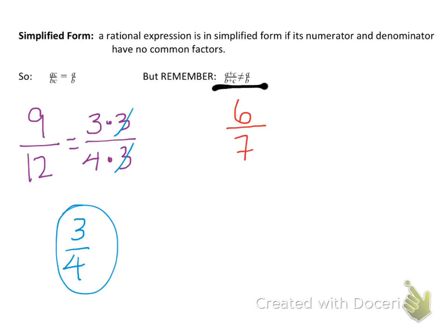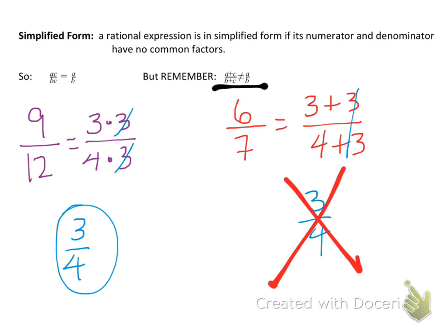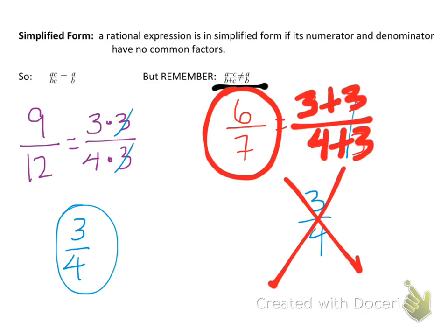Let's look at 6/7. We can agree we can't simplify 6/7. But by faulty logic, we could write 6 as 3 + 3 and 7 as 4 + 3, then try canceling those 3's and claim 6/7 equals 3/4 — and we all know that's not true. We cannot cancel them. So 3 + 3 has to stay as addition, and we cannot simplify 6/7.